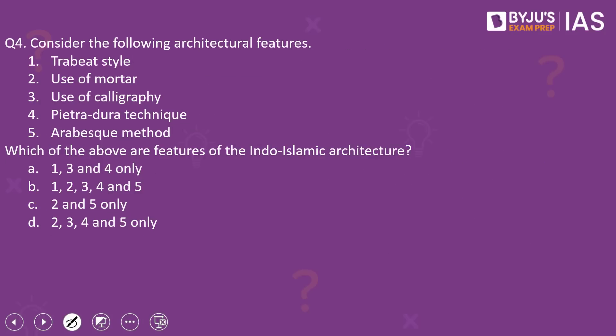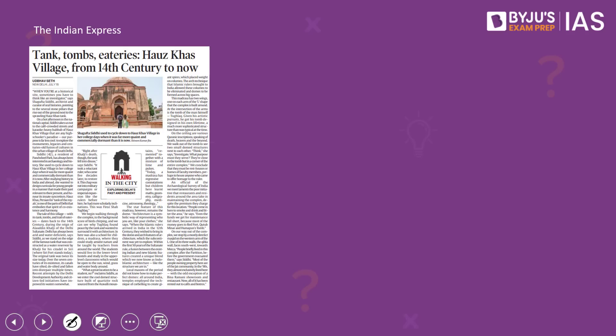Moving on to the fourth question: consider the following architectural features — Trabeat style, use of mortar, use of calligraphy, pietradura technique, and arabesque method. Which of the above are features of the Indo-Islamic architecture? This article from The Indian Express takes note of the development of the Indo-Islamic architectural style during the first 50 years of the Sultanate rule in India. Under this architecture type, a fusion between existing Indian and new Islamic features created a unique blend.